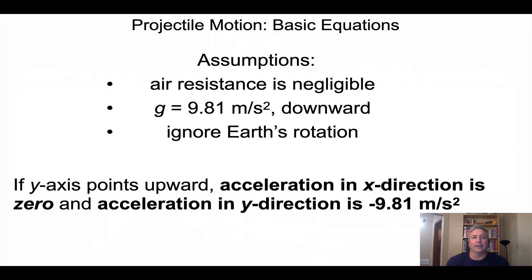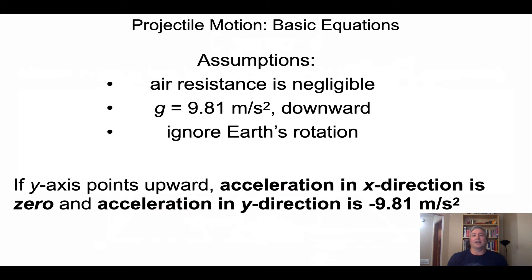We use a conventional coordinate plane with the x-axis for horizontal motion and y-axis for vertical motion. Positive y means above where the object started; negative vertical displacement means below where it started. There is no acceleration horizontally, and only acceleration vertically downward — that's the key, because horizontal acceleration being zero greatly simplifies our formulas.